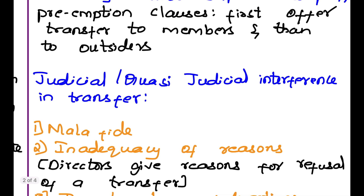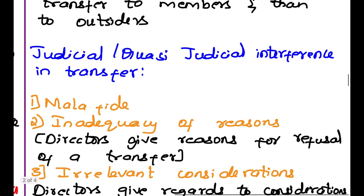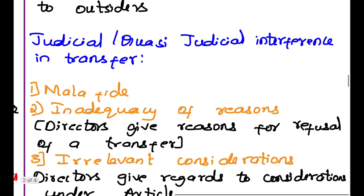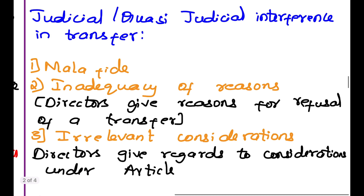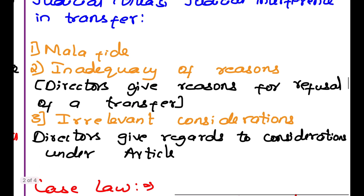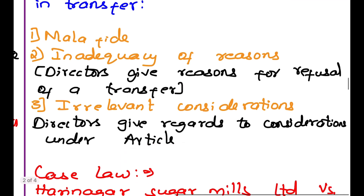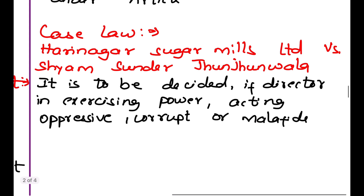Judicial interference in transfer: first is mala fide intent — if shareholders are transferring their shares with a mala fide intent, then the judiciary can interfere. Next is inadequacy of reasons — directors don't give sufficient reasons for a refusal of a transfer. Directors may refuse transfer subject to their acceptance, but if they refuse, they should give proper reasons to the court. The next is irrelevant consideration — directors give regard to considerations not under the articles. Case Law: Harinagar Sugar Mills Ltd. vs. Shyam Sundar Jhunjhunwala — it is to be decided if a director, in exercising power, is acting oppressively, corruptly or with mala fide intent.